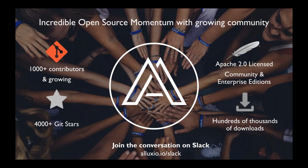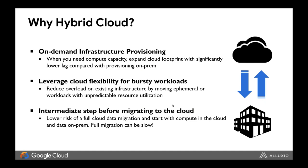Alluxio has a vibrant and growing open source community. With a hybrid cloud, you get the best of both worlds — you can continue to use your infrastructure on-premise while leveraging Google Cloud for all of its benefits. You can provision infrastructure on demand instead of waiting the long time it takes to provision hardware on-premise, and you can leverage the flexibility of a public cloud by running ephemeral compute clusters for bursty workloads.